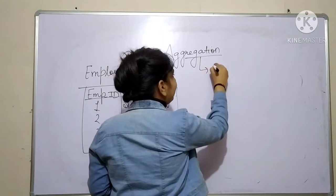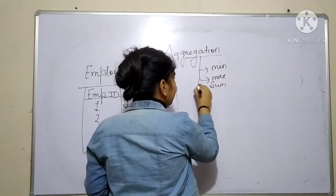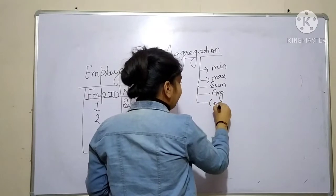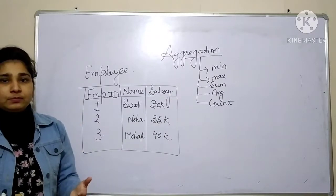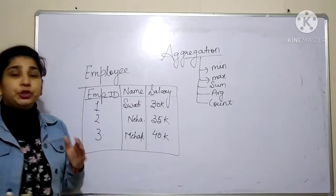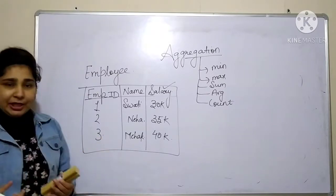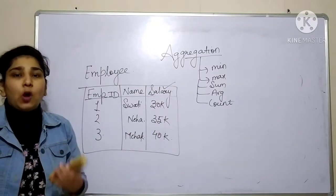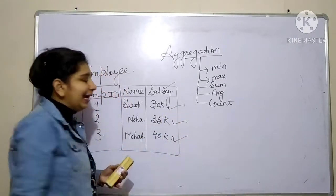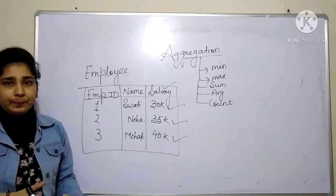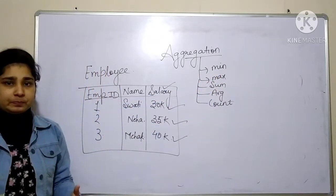The aggregate operations we have are: minimum, maximum, sum, average, and count. These five are basically your aggregate operations. You apply them on one column, looking at each and every value of that column to get the output.